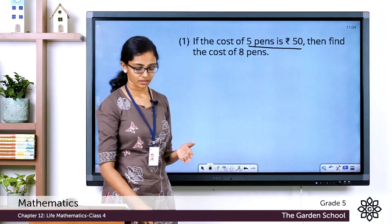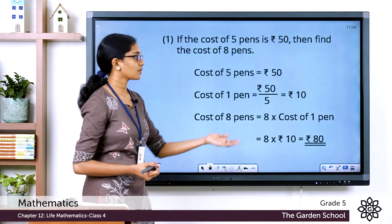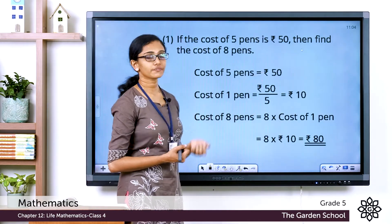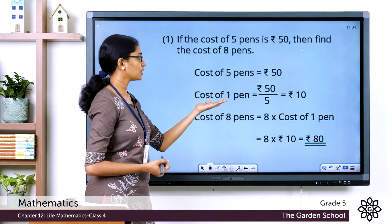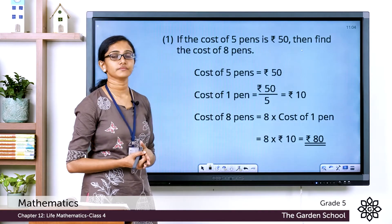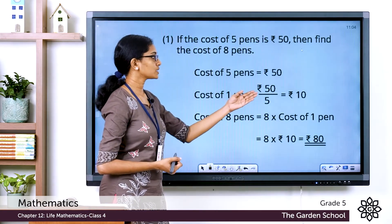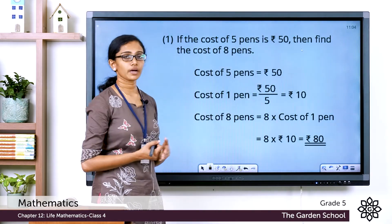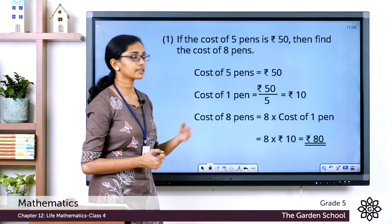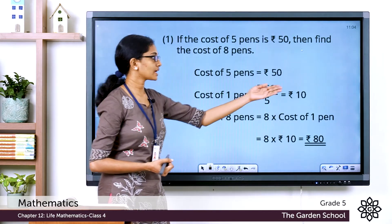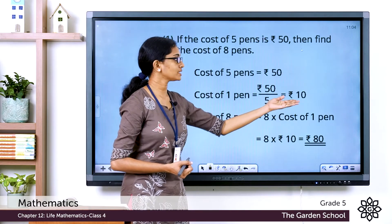Let's see the steps. The cost of 5 pens is equal to rupees 50, and from it we can write: the cost of 1 pen is equal to rupees 50 divided by 5. So the total value divided by the total number of units gives the value of 1 unit as rupees 10.